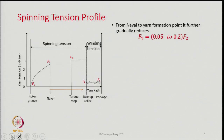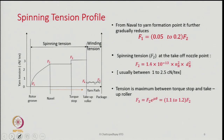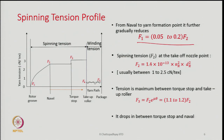Returning to the tension profile, the tension at different zones can be described by a set of equations. From the navel to the yarn formation point, F1 is 0.05 to 0.02 times F2. So in this zone there is a reduction in tension, and the spinning tension at the takeoff nozzle point reflects this.